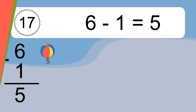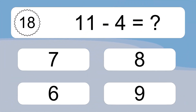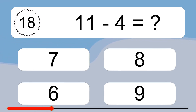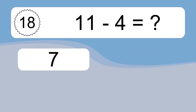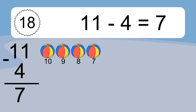11 minus 4 equals what? 11 minus 4 equals 7. Let's count it: 10, 9, 8, 7.